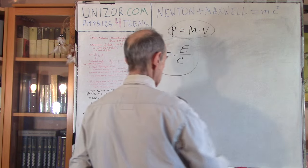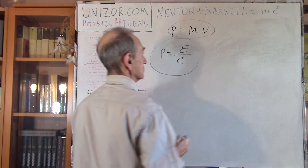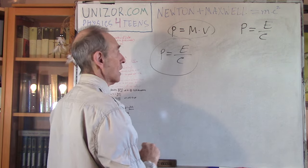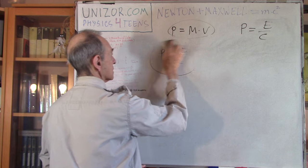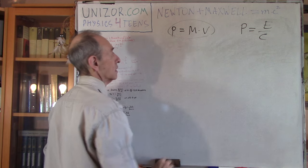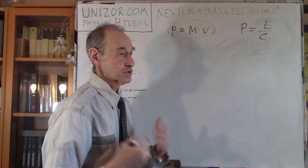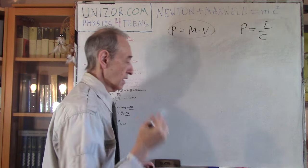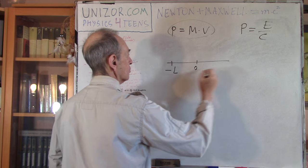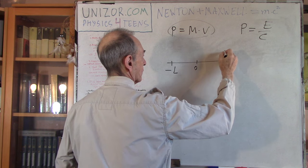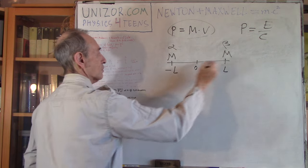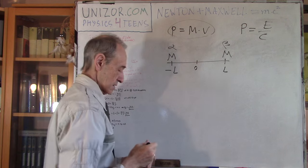Using just these two formulas, I'm going to derive that the energy of any mass equals mass times the square of the speed of light. To prove that, let's imagine a thought experiment. Somewhere in vacuum you have two equal masses — let's call them alpha and beta — on the same distance from the center, zero.